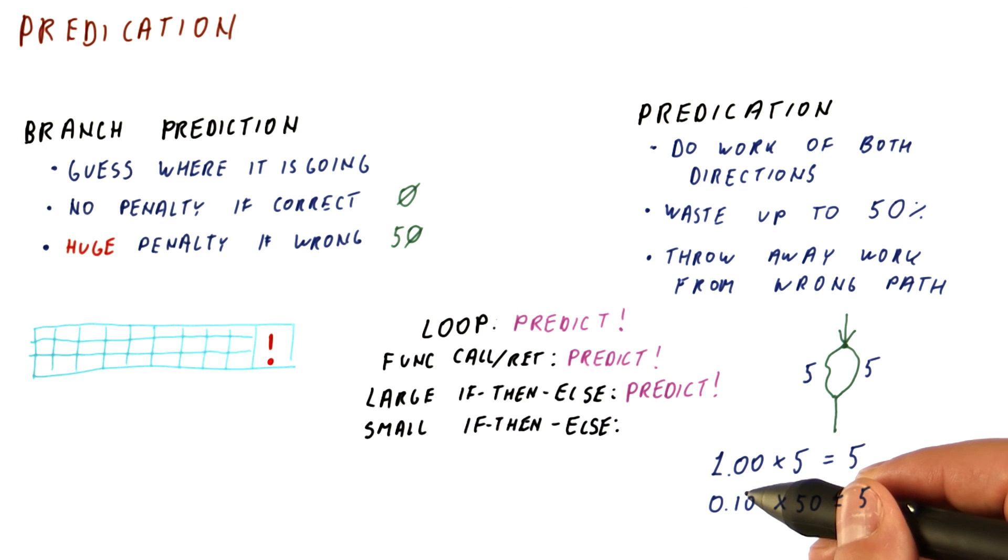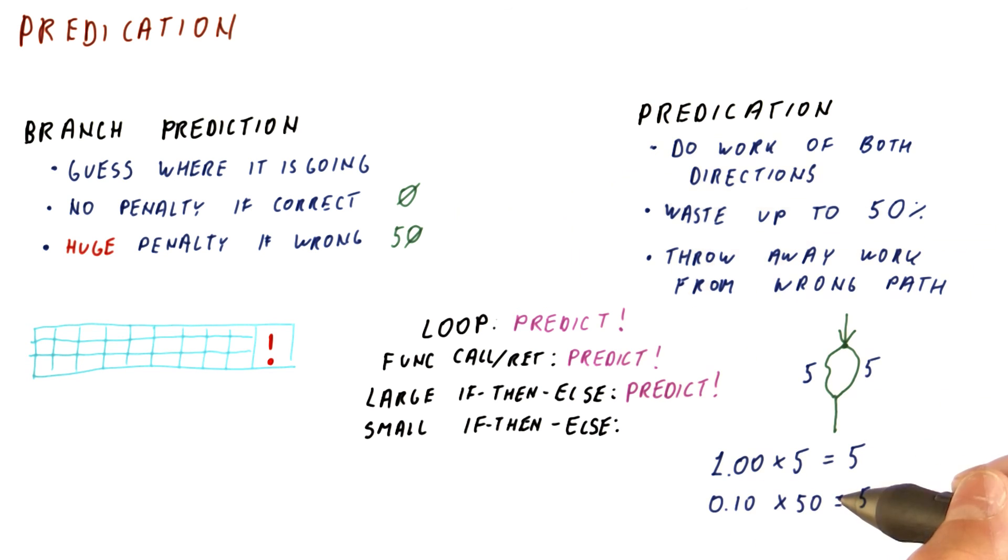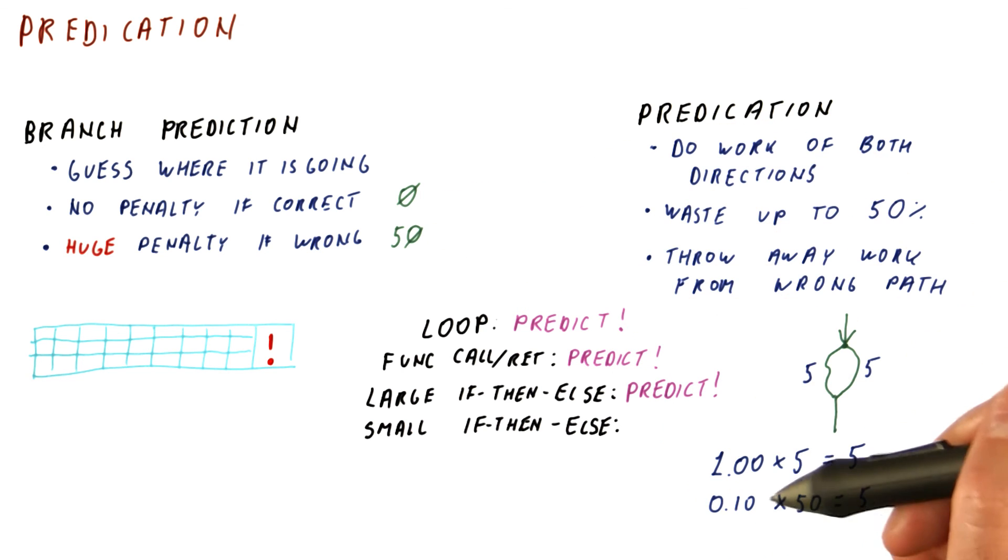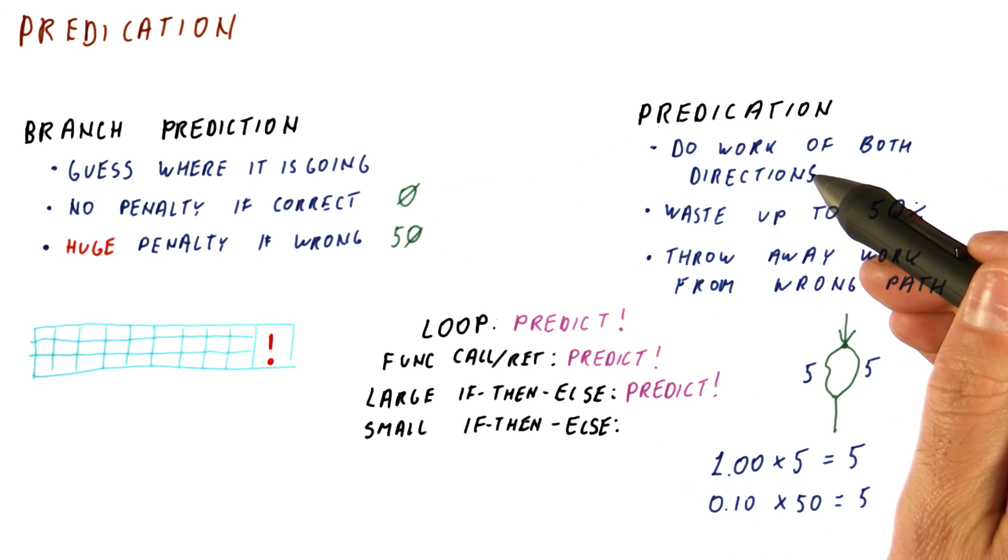So if our accuracy of prediction is 90% or better, then in this case, we are better off predicting the branch. But if our accuracy is less than 90%, we are better off predicating.